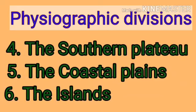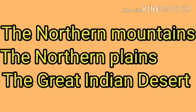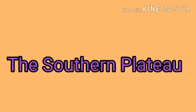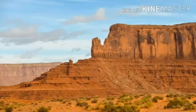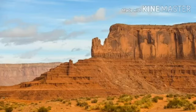Among those, the northern mountains, the northern plains and the great Indian desert were discussed in the previous video. Now we will see the southern plateau. What is a plateau? A large and flat area of land which is higher than the surrounding area is known as a plateau. That means a plateau is a high land which is roughly flat at the top.